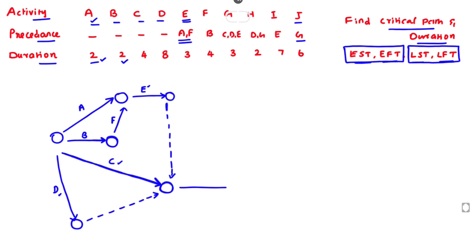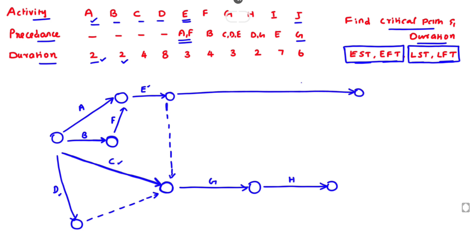Here is activity G. Next is activity H — its precedence activities are D and G. Here is the D activity and here is the G activity, so we draw H connecting from them. For activity I, the precedence is only E. Activity J follows, and we close the network by introducing a dummy activity to properly terminate the network at the end node.